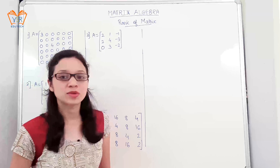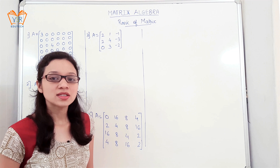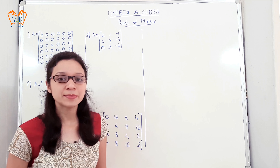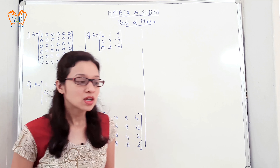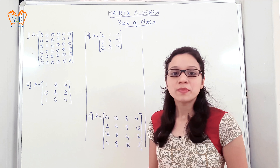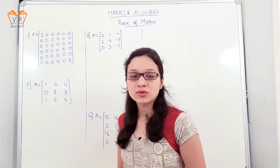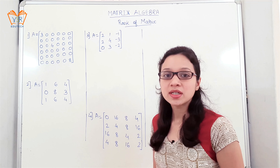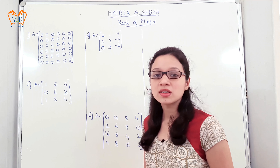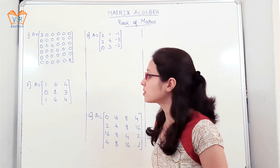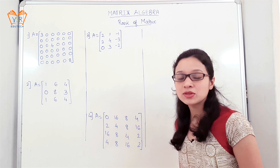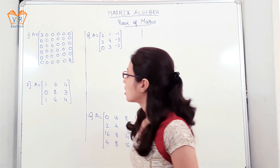Hi guys, I am Surabha. In the last video we studied the basics and properties of rank of a matrix. We know rank of a matrix can be calculated using two methods: using the determinant method and using elementary operations. In this video we will study four examples to find the rank of a matrix using elementary operations.